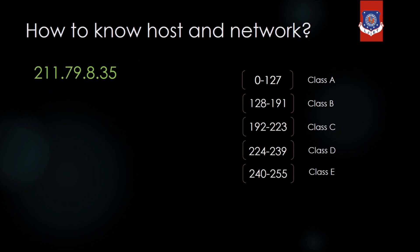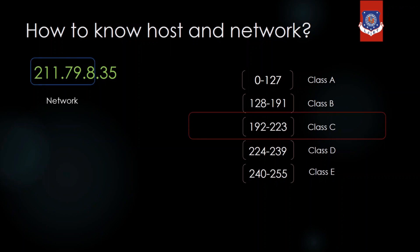Find the class, network bits, and host bits of IP address 211.79.8.35. Checking the first octet — 211 — falls in the range 192 to 223, so this belongs to Class C. In a Class C IP address, the first 24 bits are for the network and the remaining 8 bits represent the host.